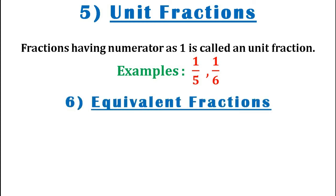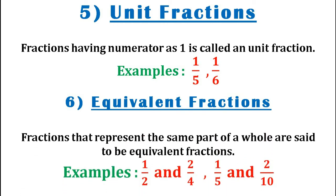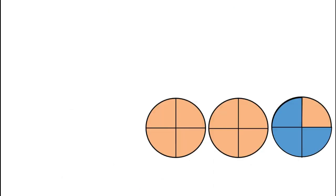The sixth type of fraction are the equivalent fractions. Fractions that represent the same part of a whole are known as equivalent fractions. Let us look at the first set of examples. The first set, that is 1 by 2 and 2 by 4, are examples of equivalent fractions because they represent the same part of a whole. Similarly, the next set, that is 1 by 5 and 2 by 10, are also examples of equivalent fractions.